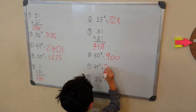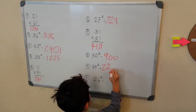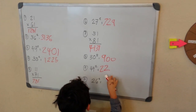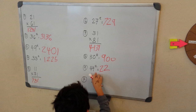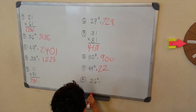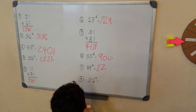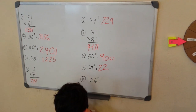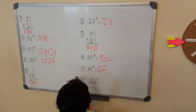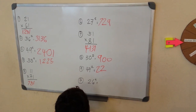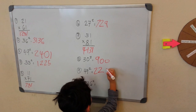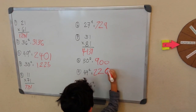47, 48, 49, 50. So, 3 squared. 3 times 3 is 09. 2,209.